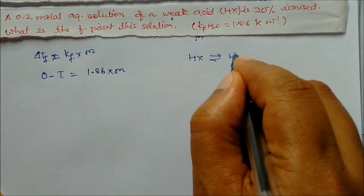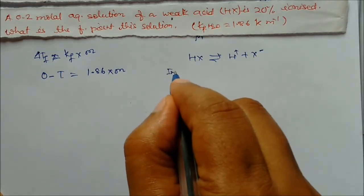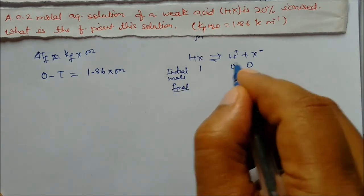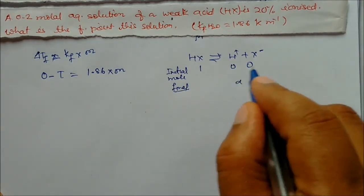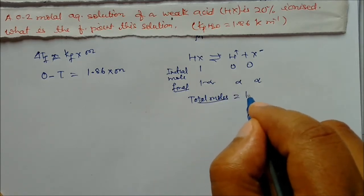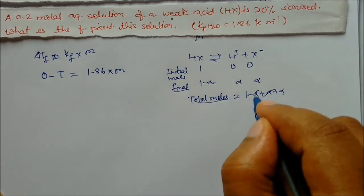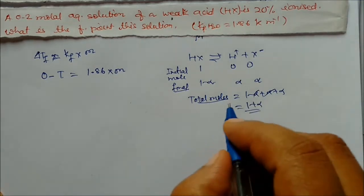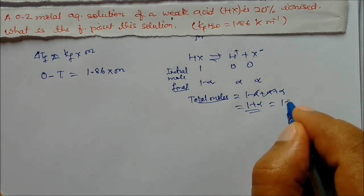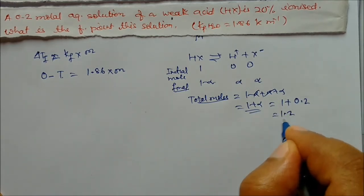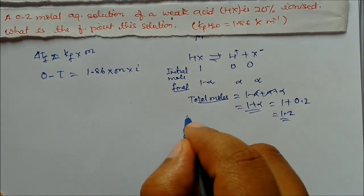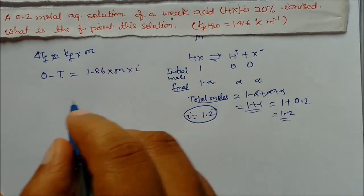Weak acid HX dissociates into H⁺ and X⁻. Initially, moles of HX = 1, H⁺ = 0, X⁻ = 0. At equilibrium, HX = 1 minus alpha, H⁺ = alpha, X⁻ = alpha. Total moles = (1 minus alpha) + alpha + alpha = 1 + alpha. Alpha is given as 20 percent, i.e., 0.2, so total = 1.2. The van't Hoff factor i = 1.2.